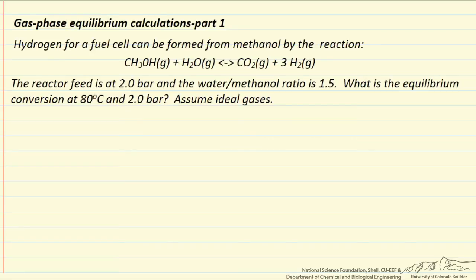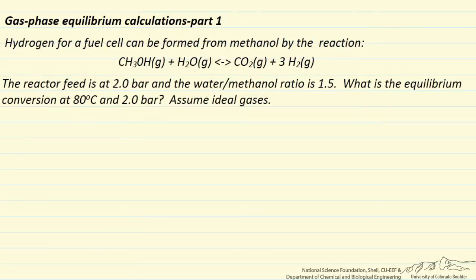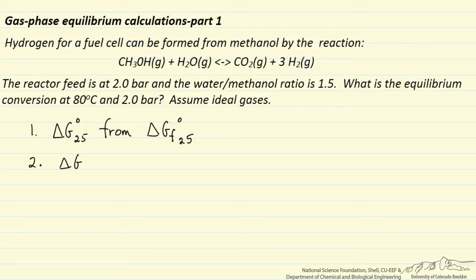We're going to have to calculate the equilibrium constant, so it's a multi-step problem. The first step is to calculate the Gibbs free energy change at 25 degrees C for this reaction using the delta G's of formation for each of the components, which we look up in a table. The second step is to use the delta G of reaction at 25 to determine the equilibrium constant at 25, which I'll call K1.